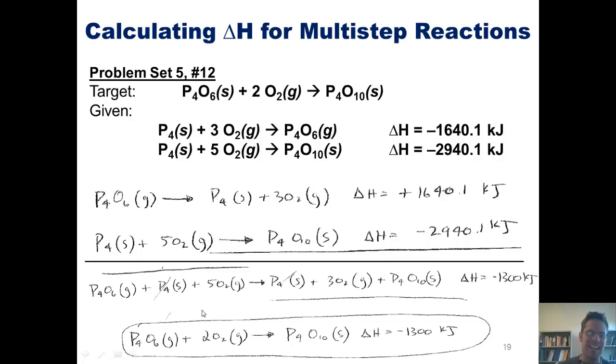The delta H for this whole process is obtained by just adding up the individual delta H's for these stepwise reactions. Positive 1640.1 added to negative 2940.1 gives me negative 1300 kilojoules for the overall process.